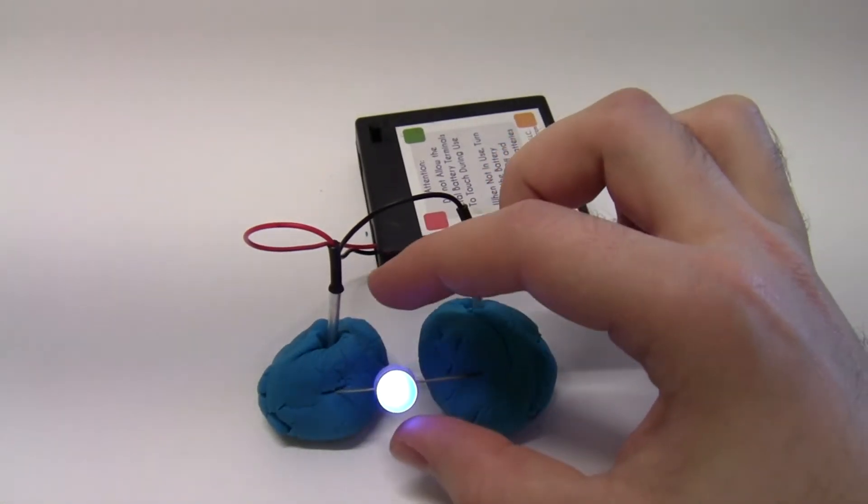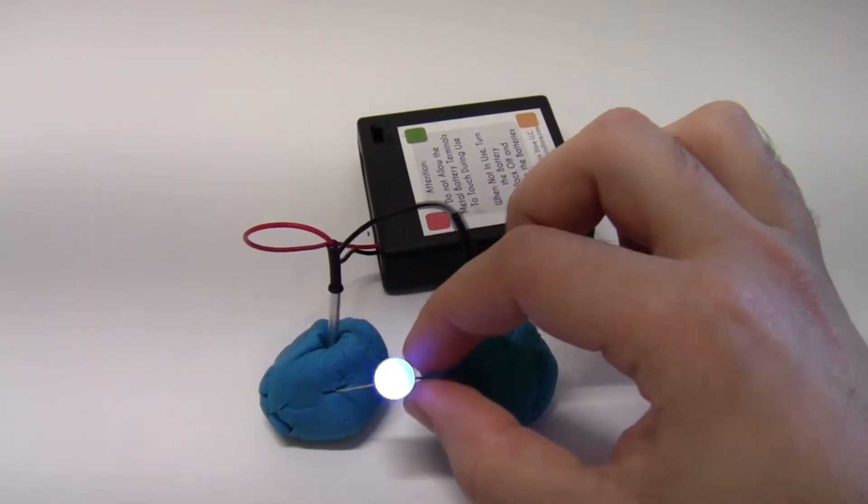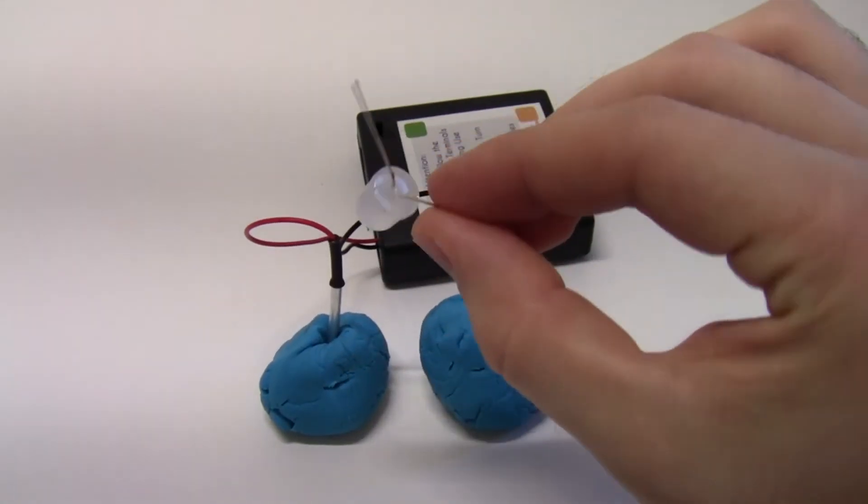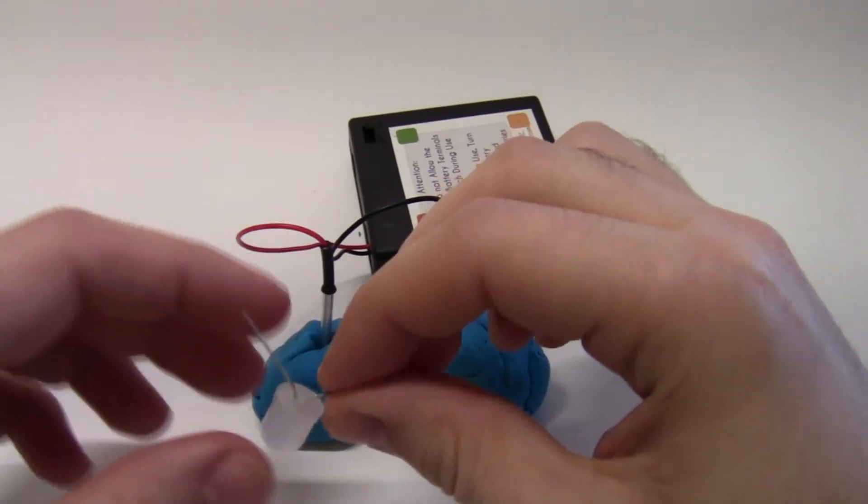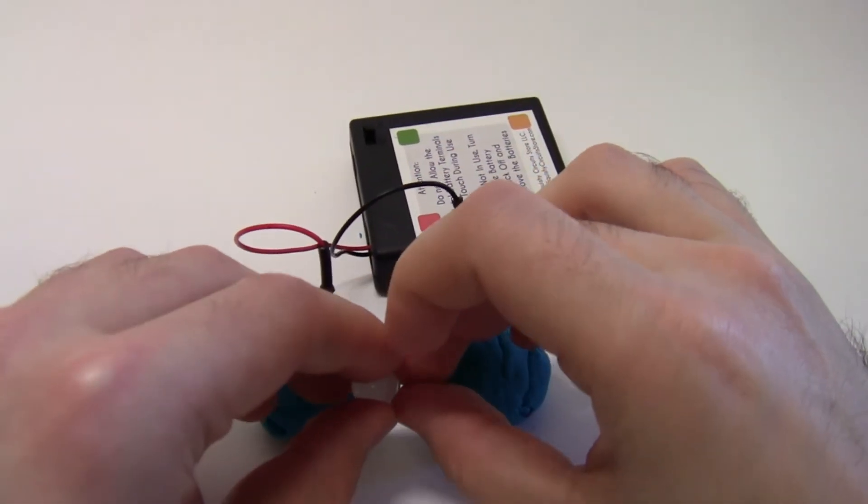This happens because LEDs act like one-way valves for electricity, so they only let electricity flow through in one direction, and if you have the LED plugged in backwards, that'll prevent the electricity from flowing and it won't light up.